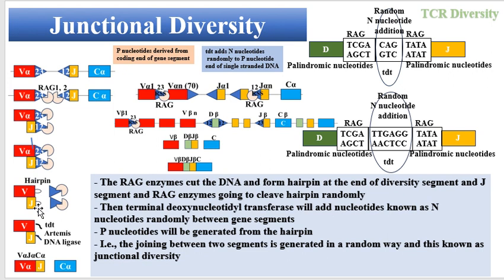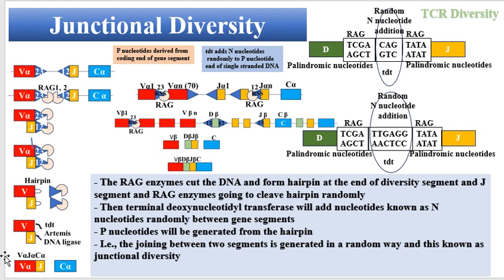RAG enzymes then cut this hairpin. The exposed area resulting from the effect of RAG enzymes on the hairpin is repaired by several enzymes — including terminal deoxynucleotidyl transferase, which adds N nucleotides — together with Artemis and DNA ligase. This ends with the formation of VJC, a functional gene that can encode TCR alpha.